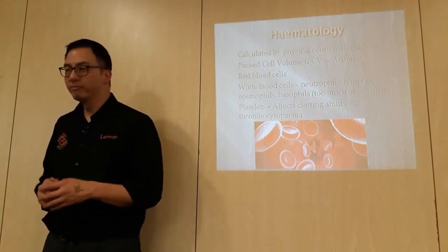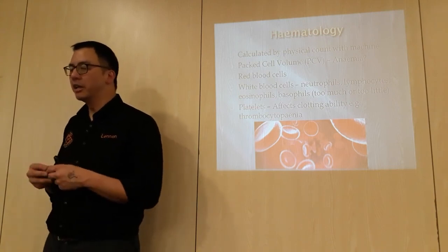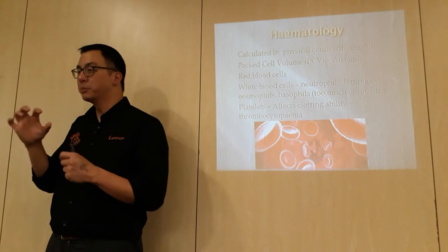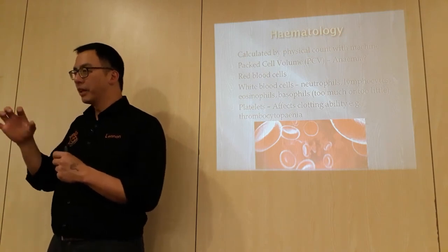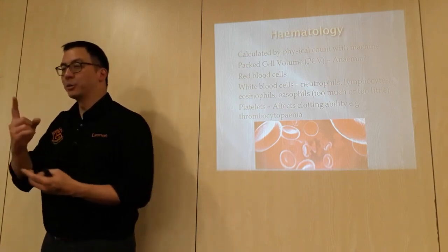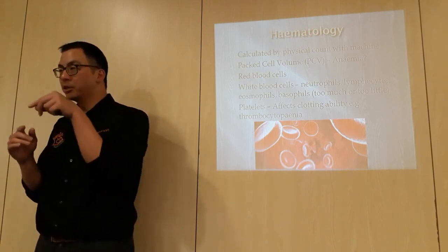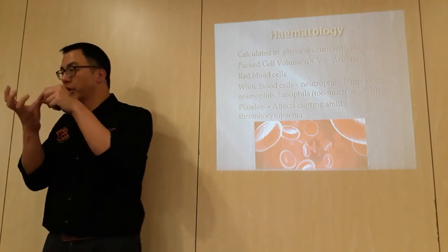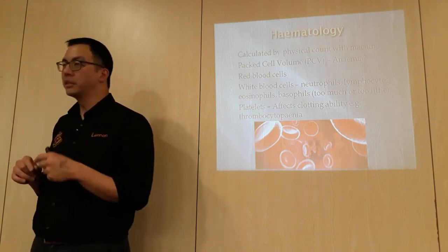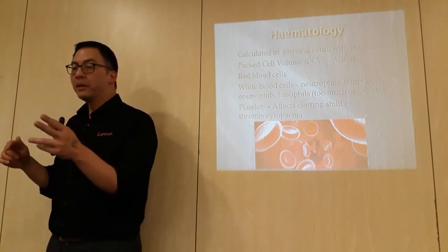Cat platelets clump because they are stickier than usual. Another interesting example is the Cavalier King Charles Spaniel, which has macro-platelets - much bigger platelets. Even though one large platelet is more efficient, it still gets counted as one. Platelets are important because when there is damage to a vessel, they go and block the site to stop bleeding.